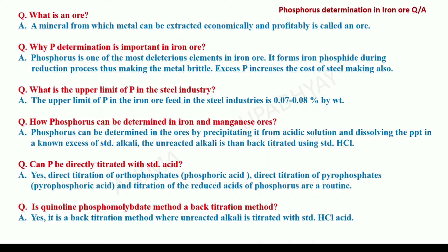If you are performing this experiment, the very first question that could be asked is: what is an ore? An ore is a mineral from which metal can be extracted economically and profitably. Why is phosphorus determination important in iron ore? Phosphorus is one of the most harmful or deleterious elements in iron ore. It forms iron phosphide during the reduction process, thus making the metal brittle. Therefore, its determination is extremely important prior to the extraction of metal from the ore.